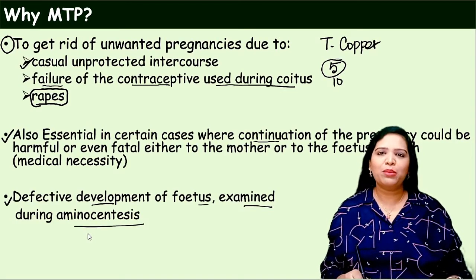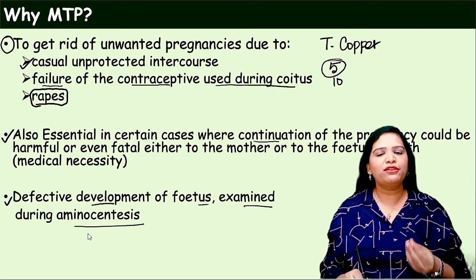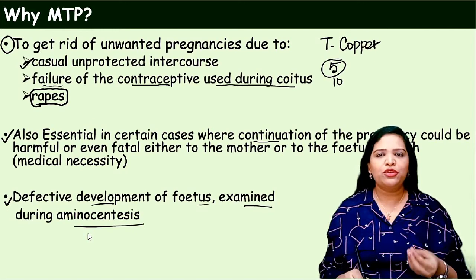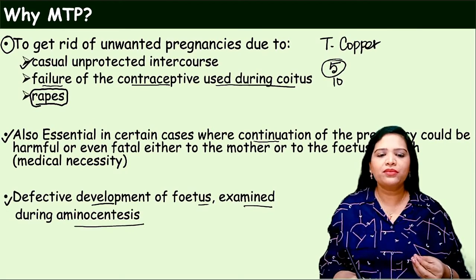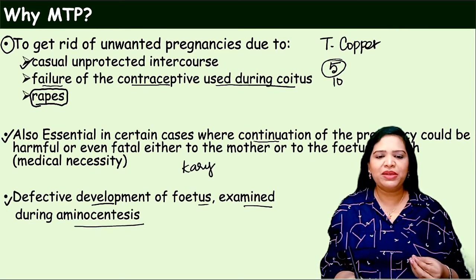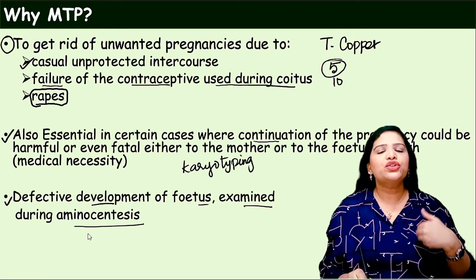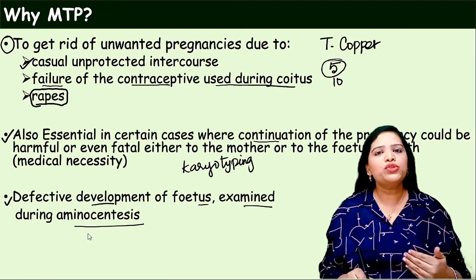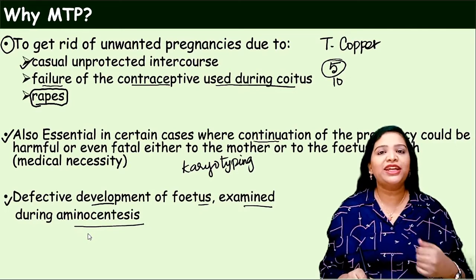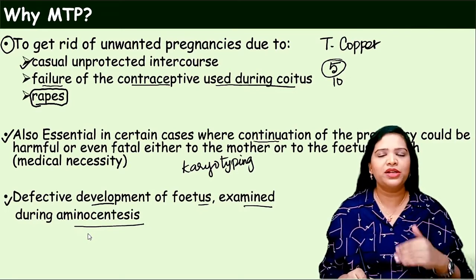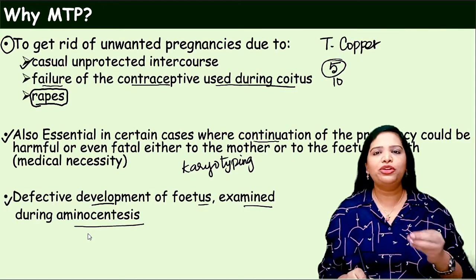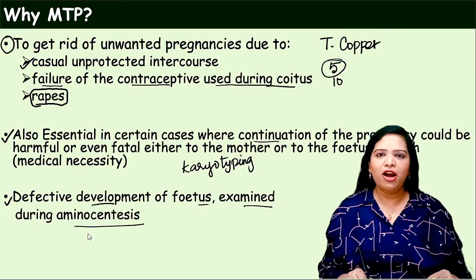Amniocentesis is a medical procedure where the amniotic fluid is taken out — it contains the baby's cells. Karyotyping will be done using amniocentesis. We can know if the growing fetus has any chromosomal abnormalities like Down syndrome. If such conditions are there, the doctor advises the couple not to continue the pregnancy; it is better to do the abortion.